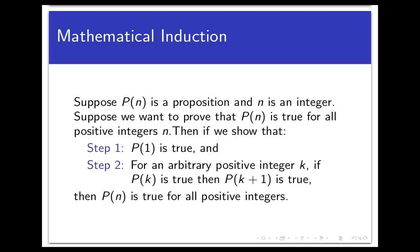The first step is to prove that the predicate is true for the case n equals 1. The second step is to prove that if the predicate is true for an arbitrary positive integer k, then the predicate is true for k plus 1. In the first step we prove that p of 1 is true using just a constructive proof — we simply plug 1 into the predicate and check if the resulting statement is true. The second step is a conditional statement that we establish with a direct proof by assuming p of k is true and then proving p of k plus 1 is true.